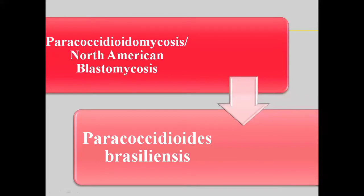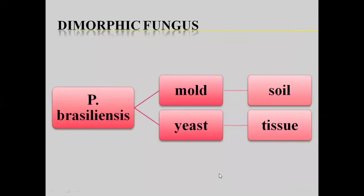What is the morphology of Paracoccidioides brasiliensis? Paracoccidioides brasiliensis is a dimorphic fungus, meaning it is present in two shapes. It can exist in two different morphologies.